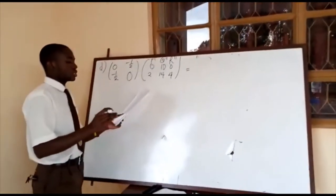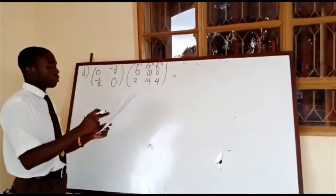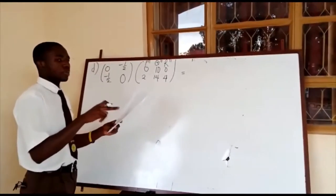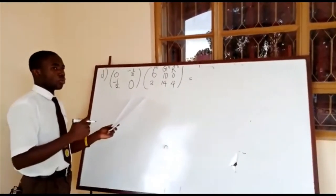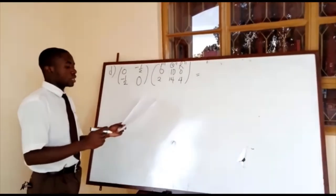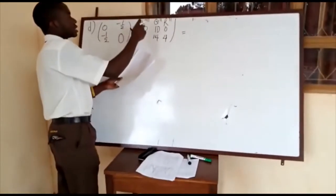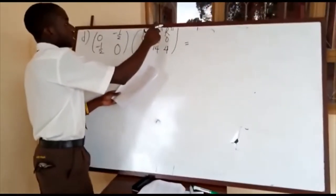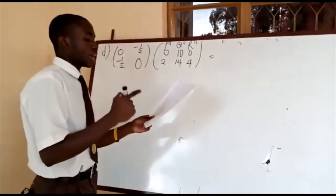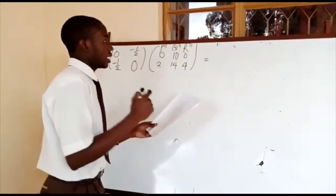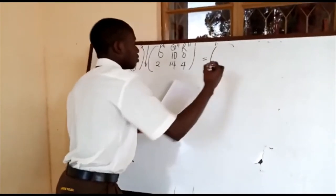We continue with part D, which requires us to find the coordinates of P, Q, and R. In part C we found the single matrix that maps P double prime, Q double prime, R double prime back to the original object. We now pre-multiply it with the coordinates of P double prime, Q double prime, R double prime to find the coordinates of the original triangle P, Q, and R.